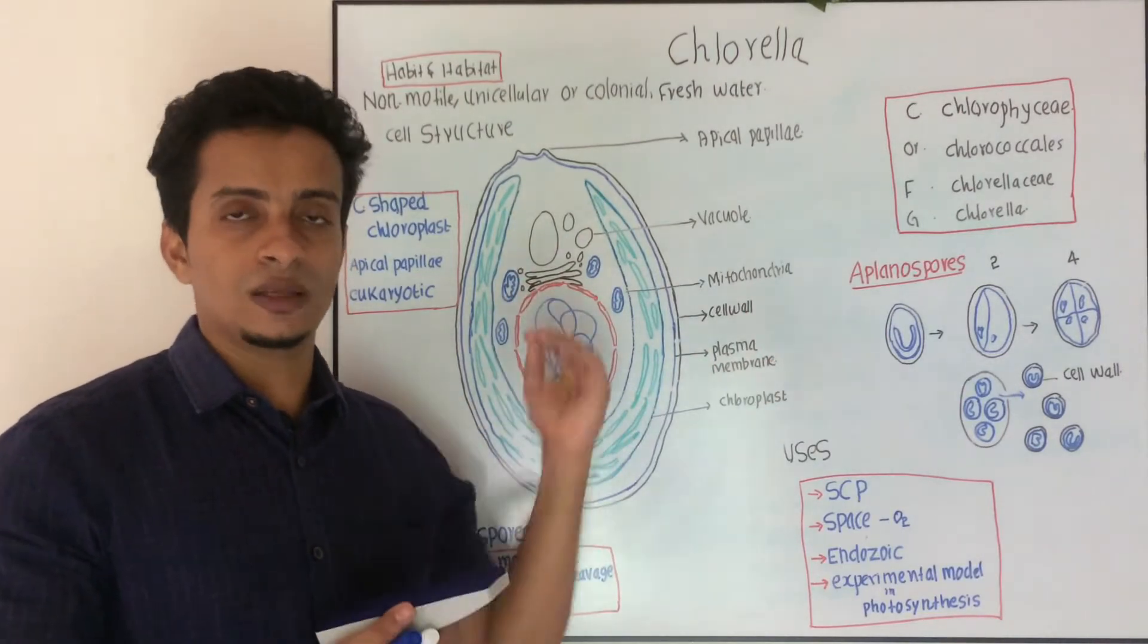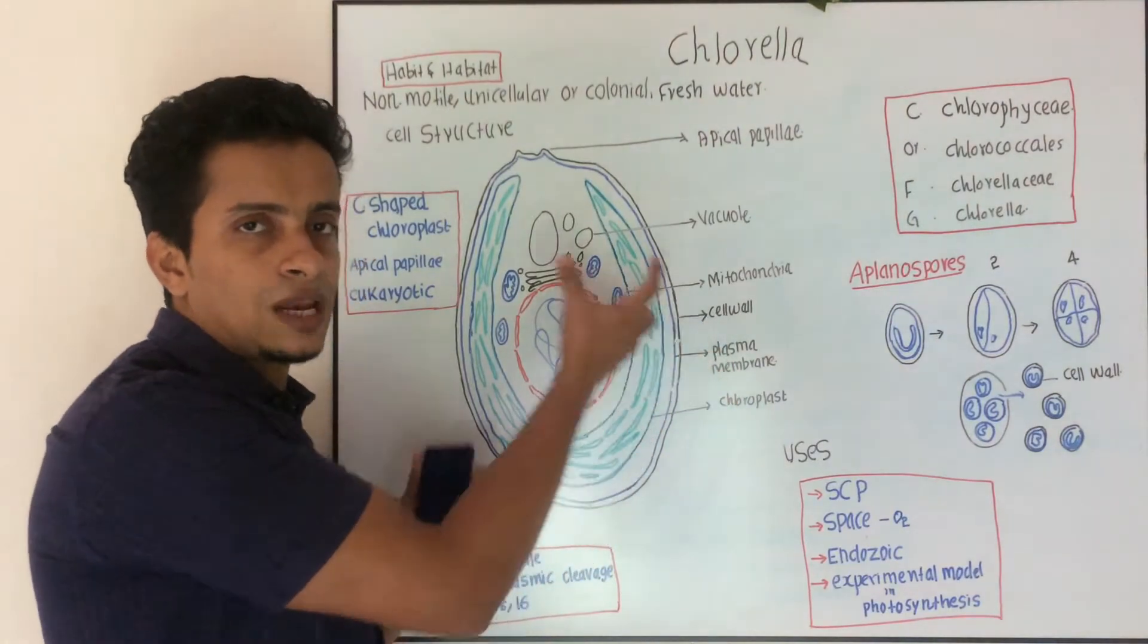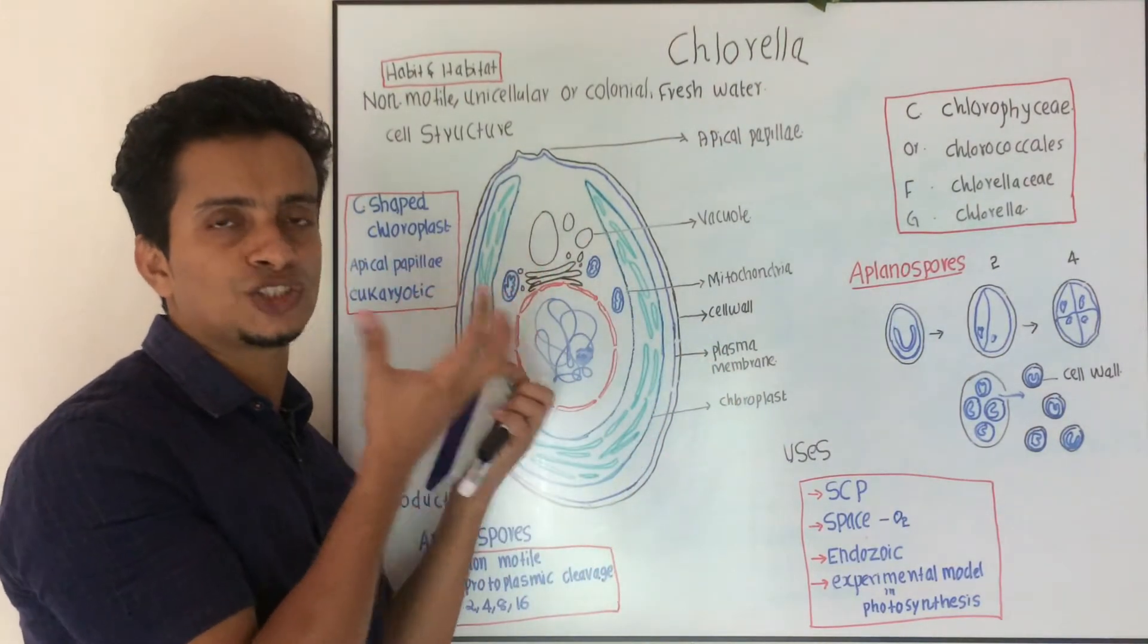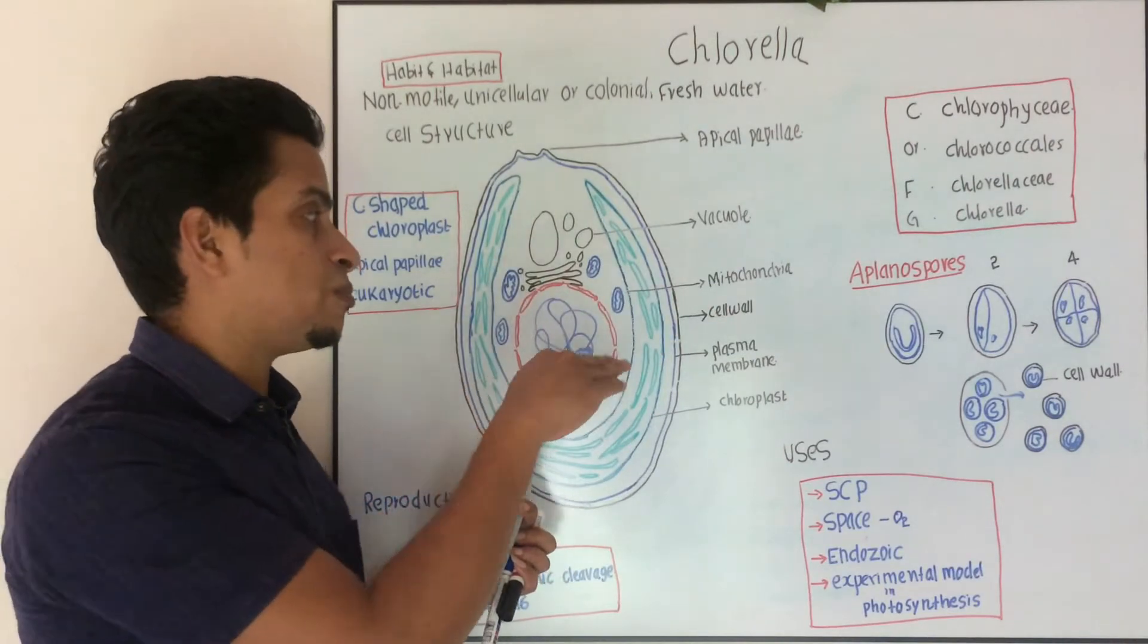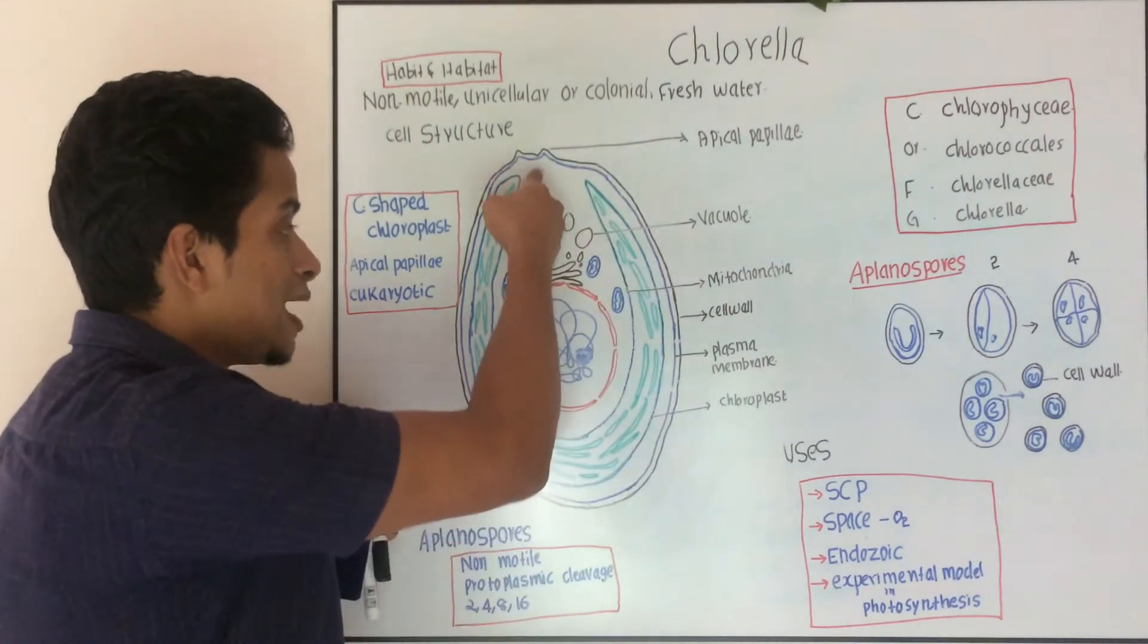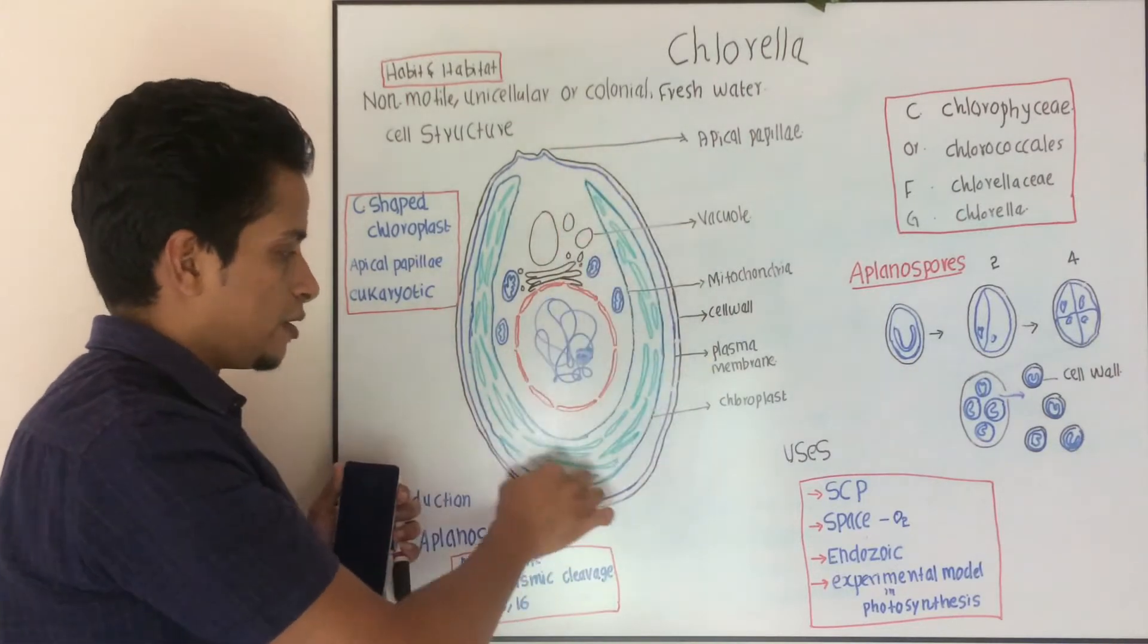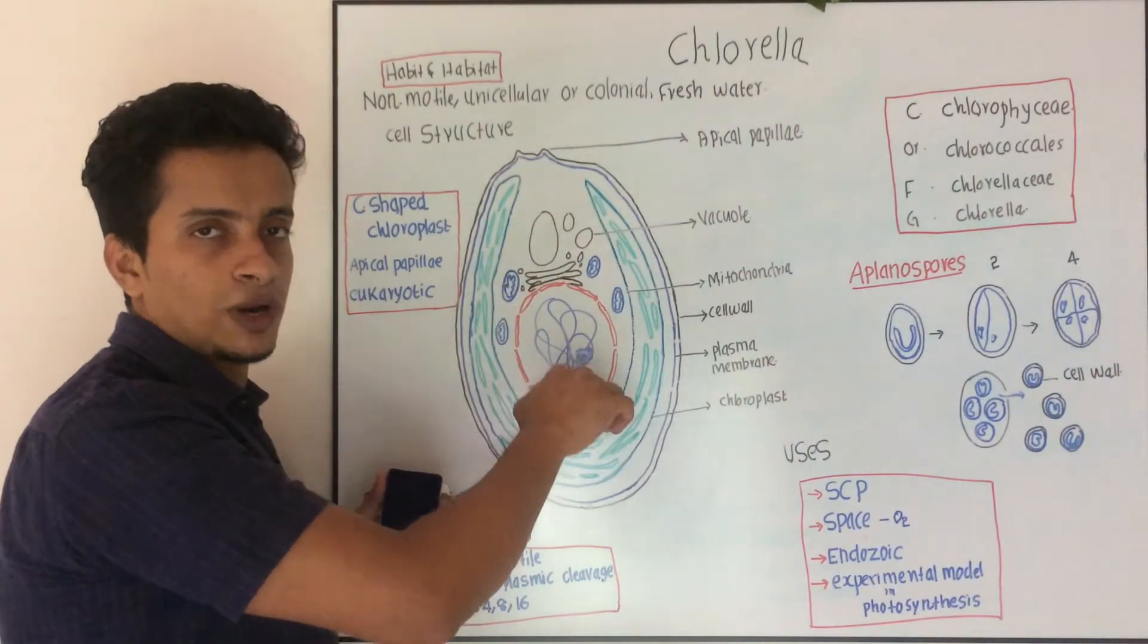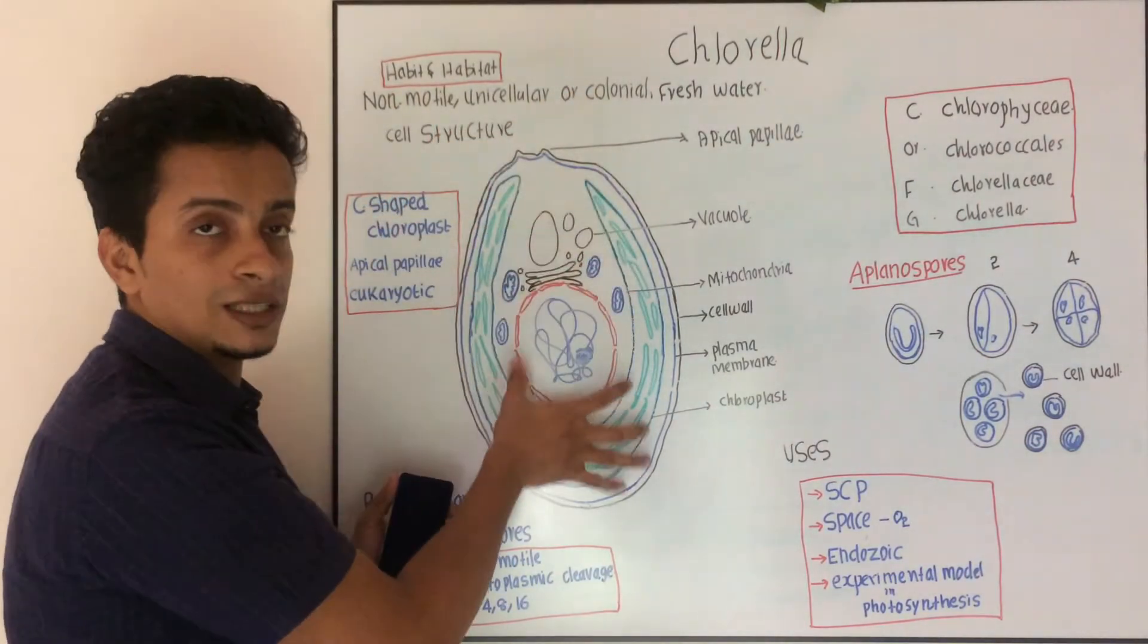One is the cell wall. Then the next is plasma membrane. Then you can see a C-shaped chloroplast. This is a chloroplast, roughly C-shaped, that's what you can see.